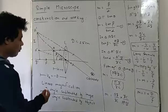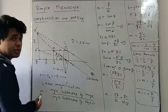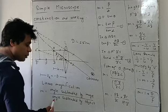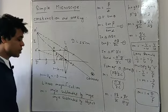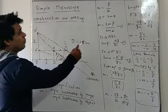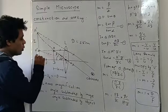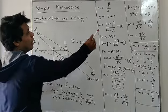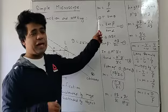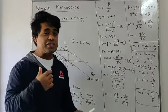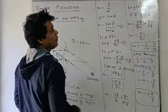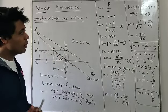What is linear magnification? It is represented by M — the angle subtended by the final image divided by the angle subtended by the object. The final image makes angle beta and the object makes angle alpha, so linear magnification equals beta by alpha. When the angle is very small, theta is written as tan theta, so we write tan beta divided by tan alpha.